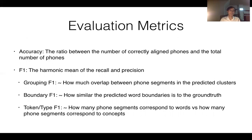We evaluated our model using first alignment accuracy, which scores the number of correctly aligned phones to image regions, and several F1 scores from the standard unsupervised term discovery literature: the grouping F1, which scores overlap between phone segments in each predicted cluster; the boundary F1, which scores the quality of word boundaries; and the token and type F1, which scores the purity of the discovered clusters.